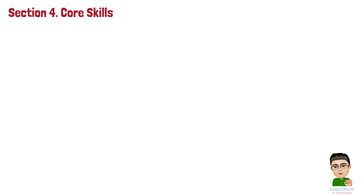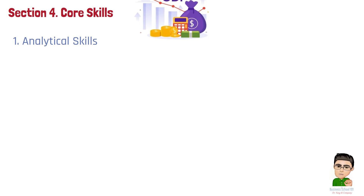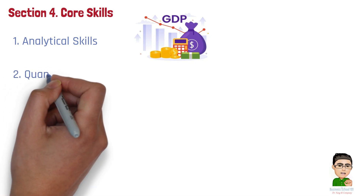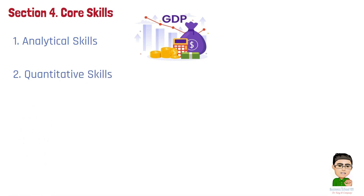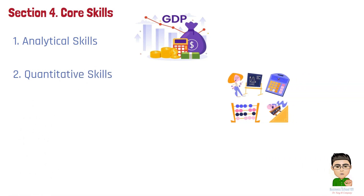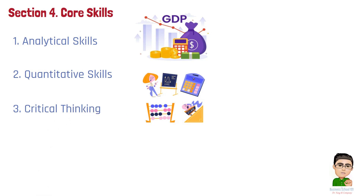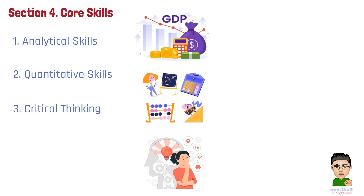To learn macroeconomics effectively, several key skills are essential. Number 1: Analytical Skills. Macroeconomics requires analyzing large-scale economic data and understanding the relationships between economic indicators, such as how changes in GDP affect inflation and employment. Number 2: Quantitative Skills. Basic mathematical and statistical skills are important for interpreting economic models, analyzing data, and understanding economic forecasts and trends. Number 3: Critical Thinking. The ability to evaluate economic policies and their impacts on the broader economy is crucial. Critical thinking helps in assessing the effectiveness of different economic strategies and policies.